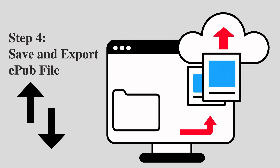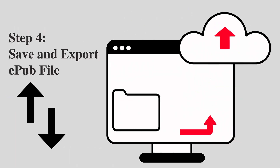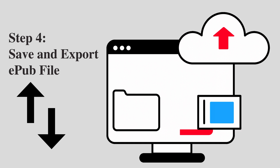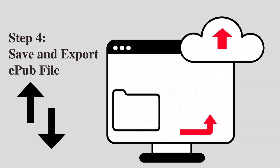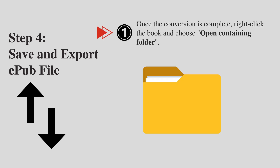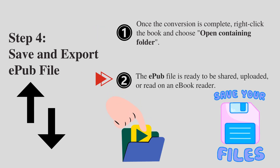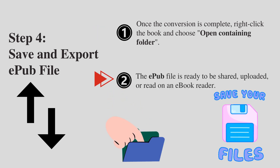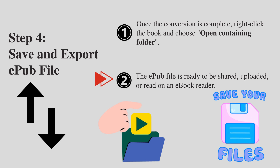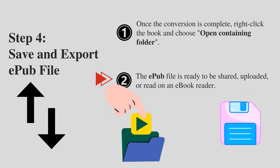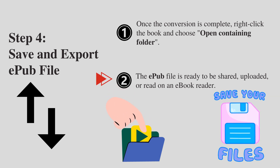Step 4: Save and export the EPUB file. Once the conversion is complete, right-click the book and choose Open Containing Folder. The EPUB file is ready to be shared, uploaded, or read on an e-book reader.